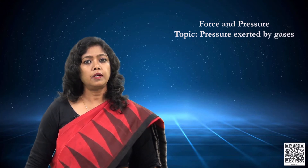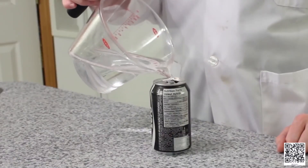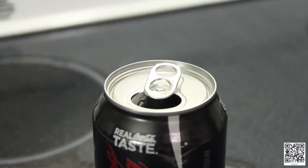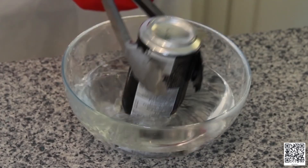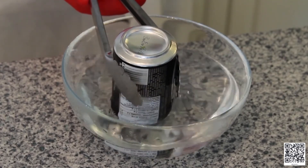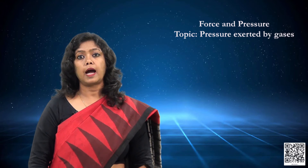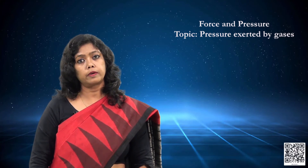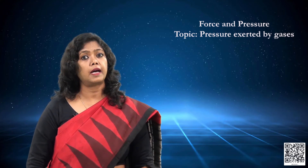The existence of atmospheric pressure can be demonstrated by many activities. In one such activity, I have taken a small can and boiled a small quantity of water in it. Now, as the water is boiling in the can, I pour cold water over the can. We will see that the can collapses or gets crumbled. Why does the shape of the can change? The can changes its shape because of the atmospheric pressure acting on it.